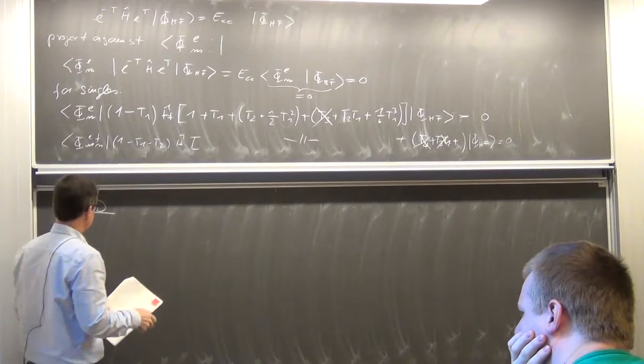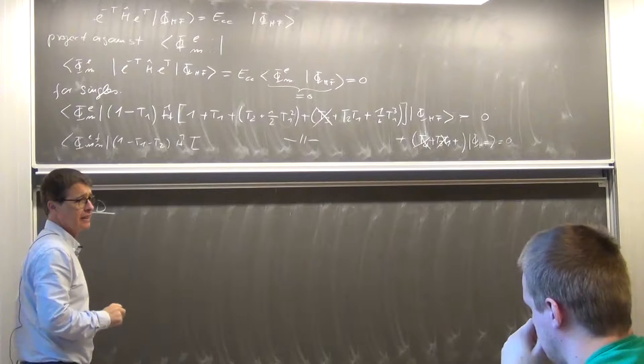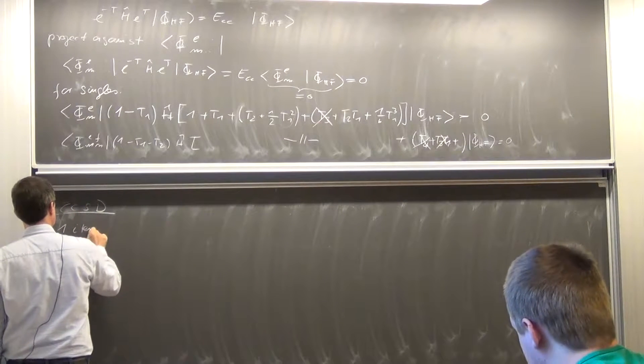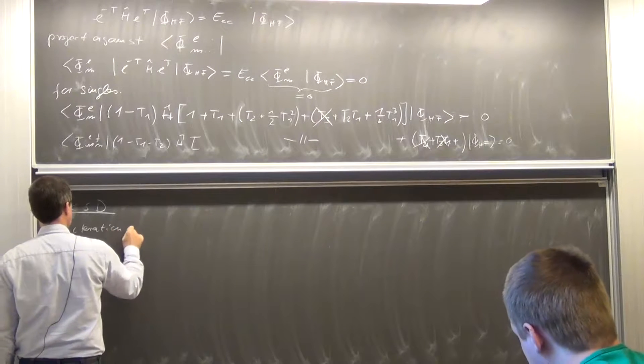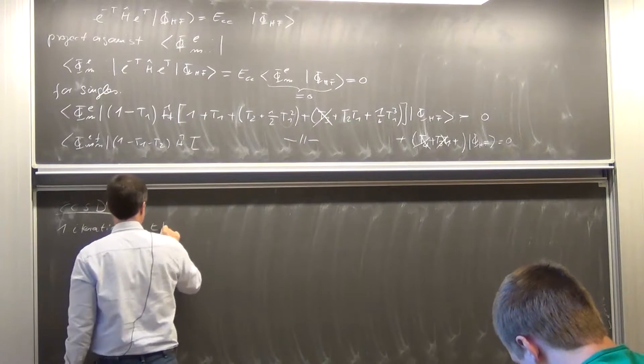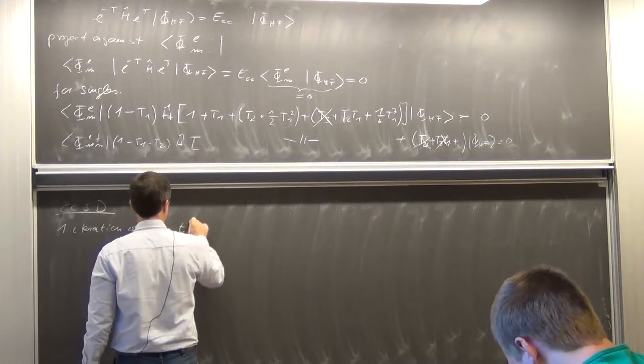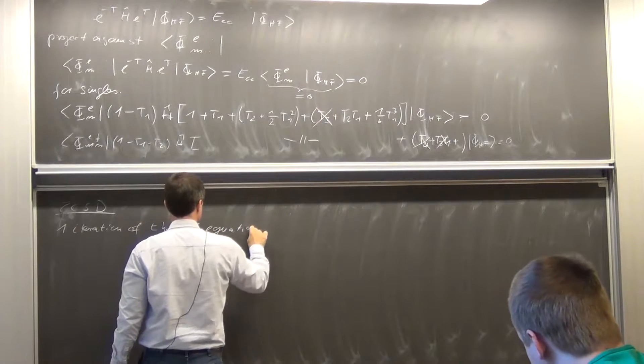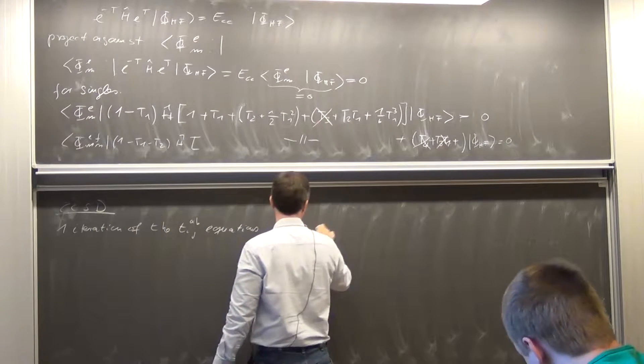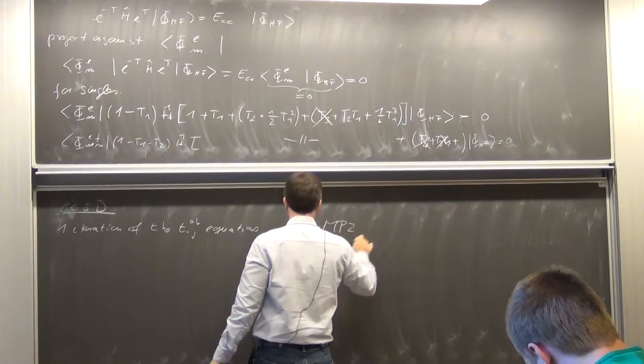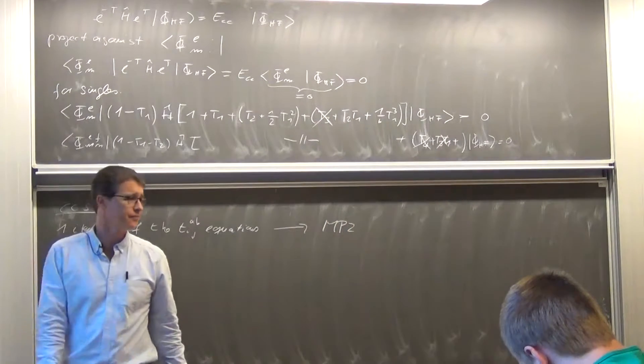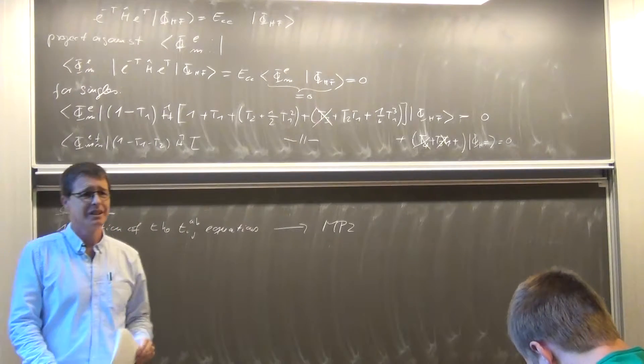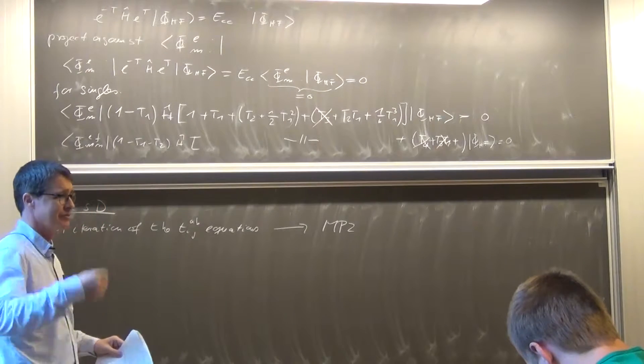So we start CCSD, and I take the first iteration of the TIJAB equations, then I get MP2. So if you have written a CCSD program, you sort of get MP2 for free.